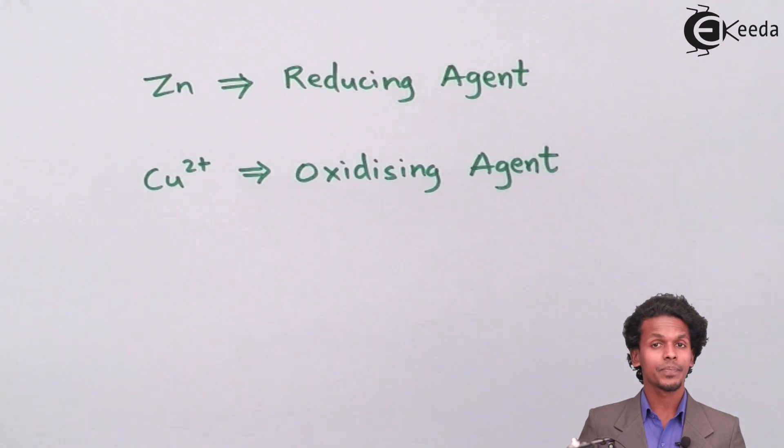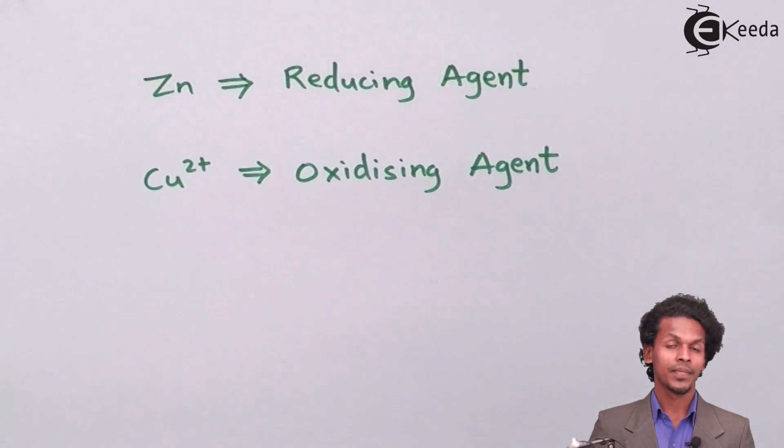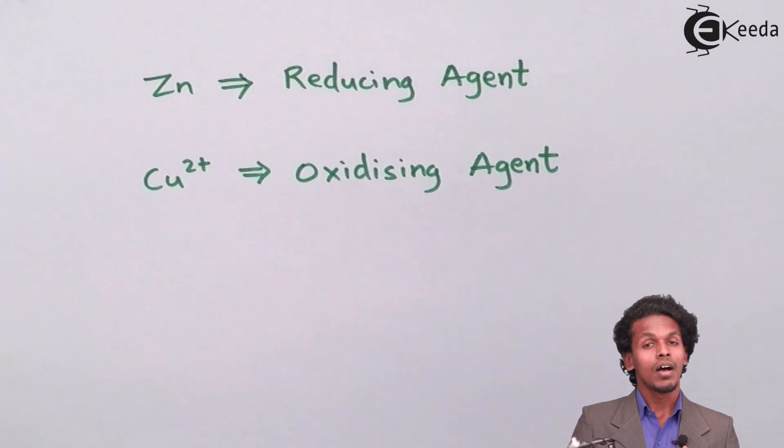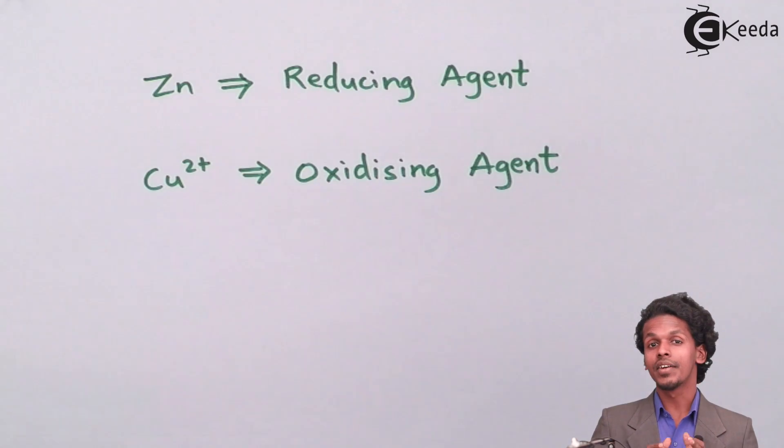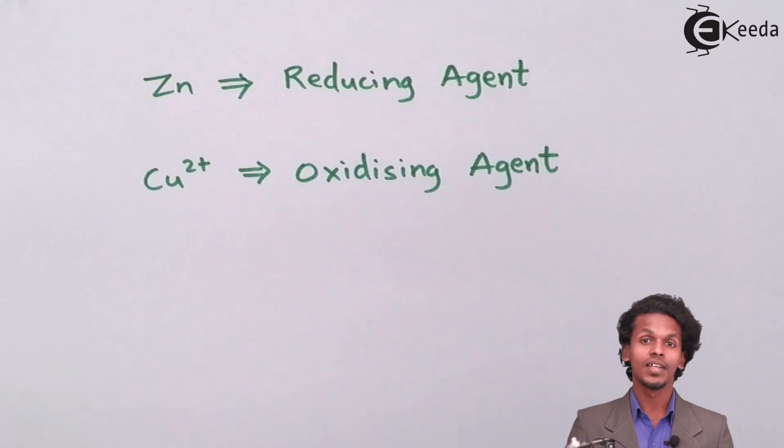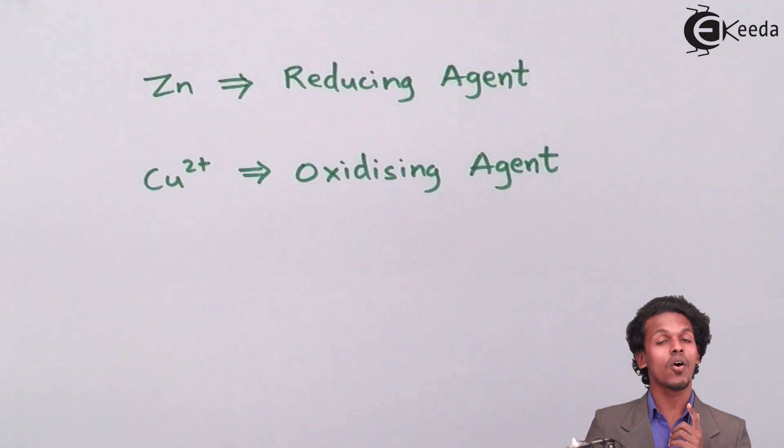So this is how we can differentiate what is reductant and what is oxidant. Oxidants are those who show reduction process. While reductants are those who show oxidation process. And please don't get confused between oxidation reaction and reduction reaction, and oxidants and reductants. People usually get confused. So please keep this in your mind.